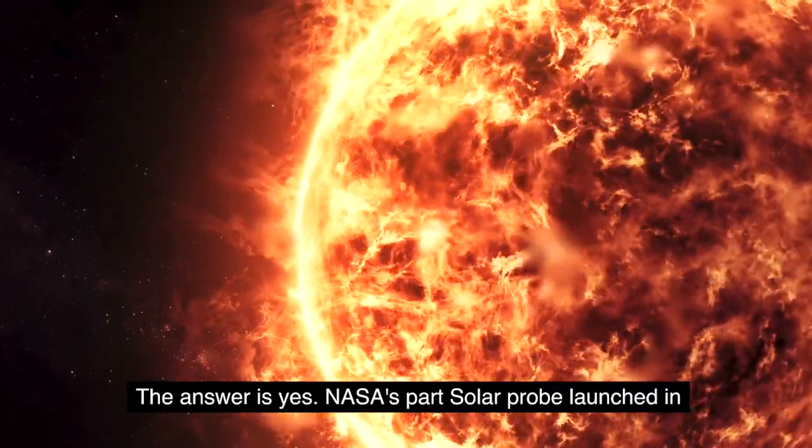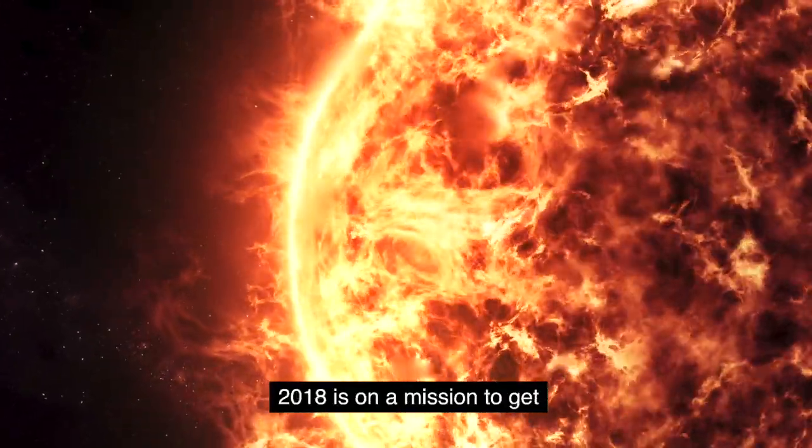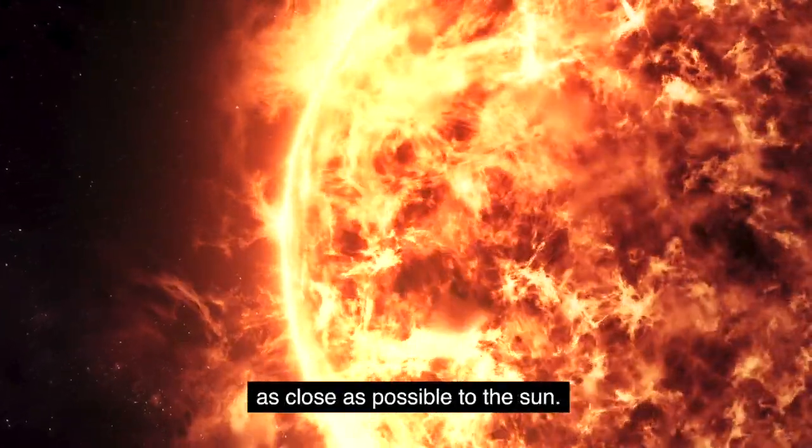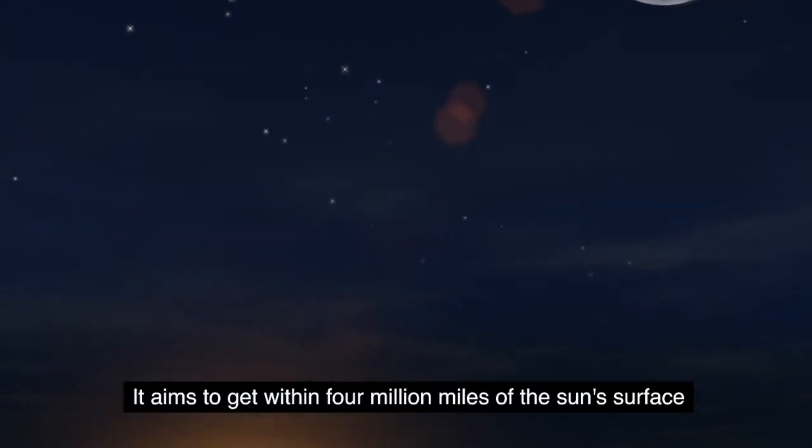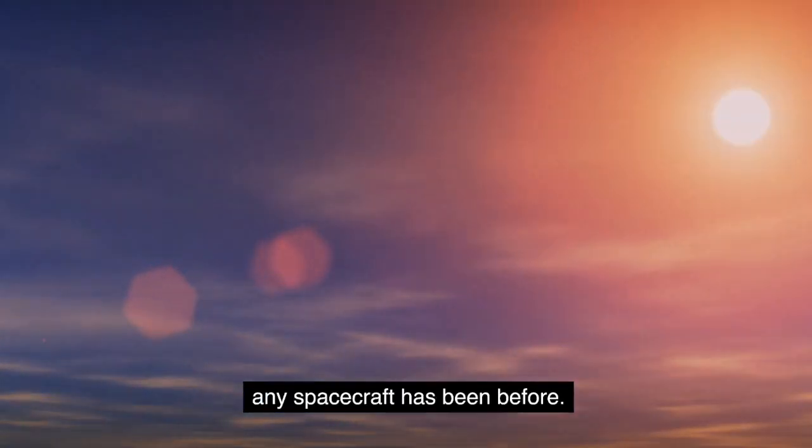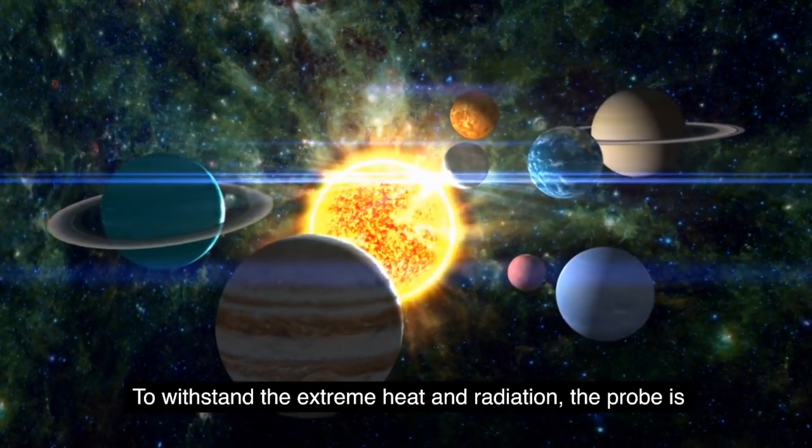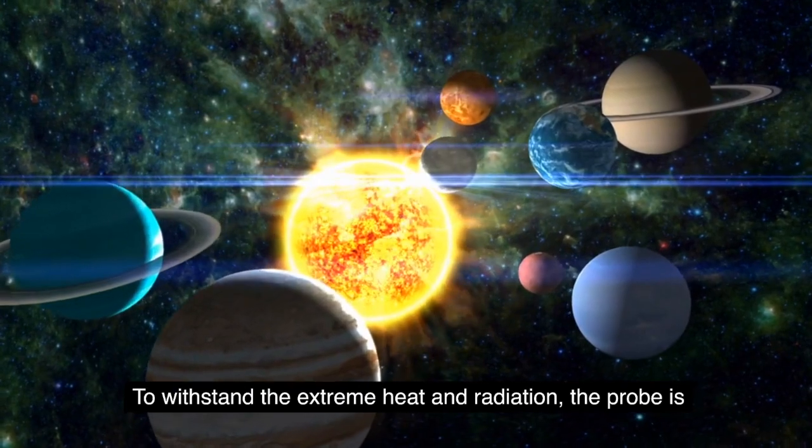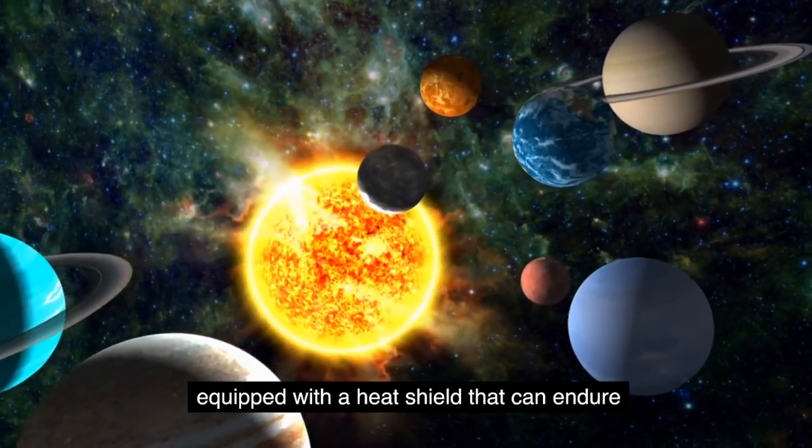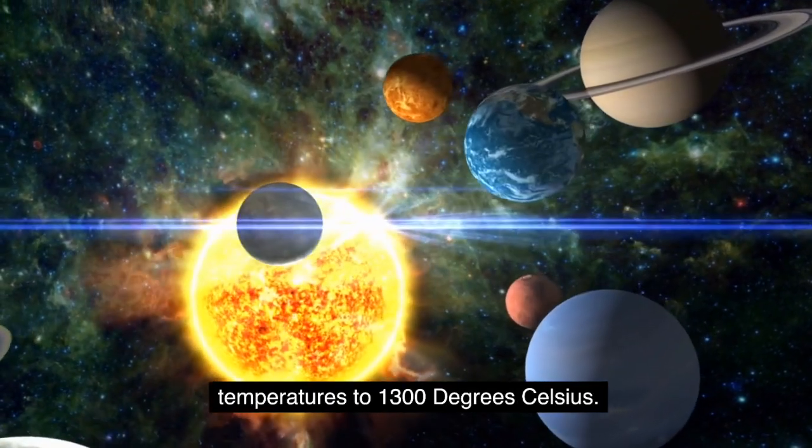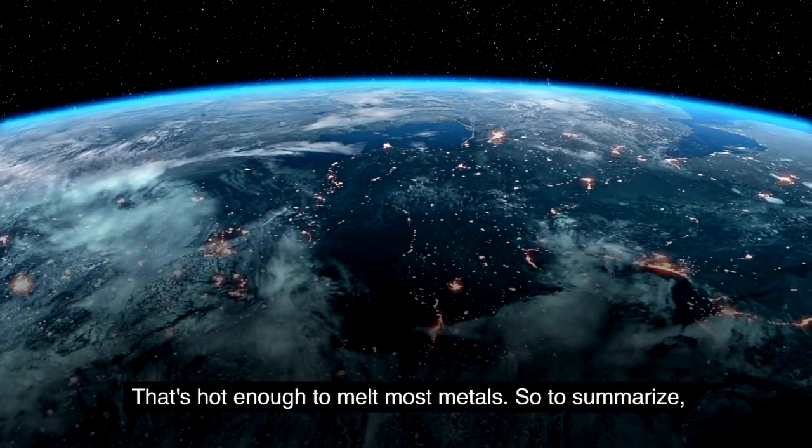NASA's Parker Solar Probe, launched in 2018, is on a mission to get as close as possible to the sun. It aims to get within 4 million miles of the sun's surface, which is seven times closer than any spacecraft has been before. To withstand the extreme heat and radiation, the probe is equipped with a heat shield that can endure temperatures up to 1,300 degrees Celsius. That's hot enough to melt most metals.